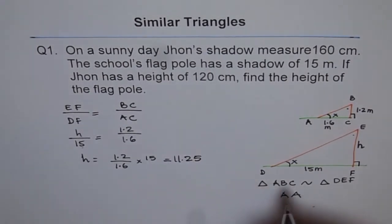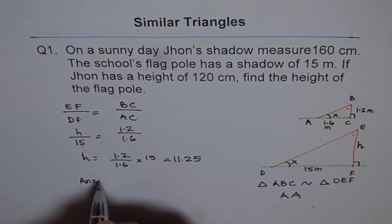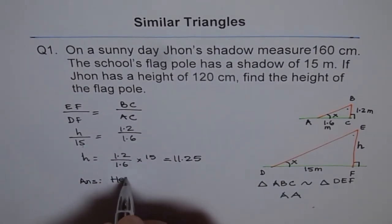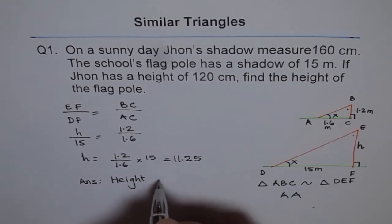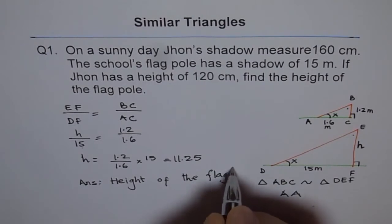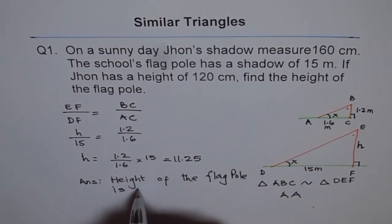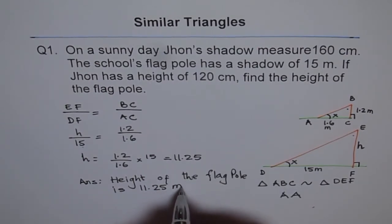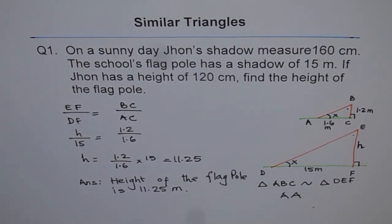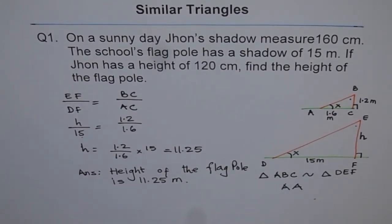Right? So we can say that the height of the flag pole is, so we can write down our answer, that height of the flag pole is 11.25 meters. Units are very important to write. Okay? Have a good look at the answer, right? So that is how using similar triangles, we can solve these kinds of problems. Okay? Thank you.